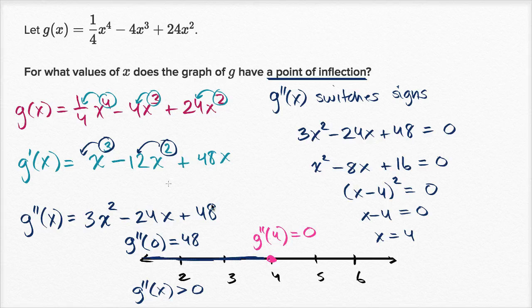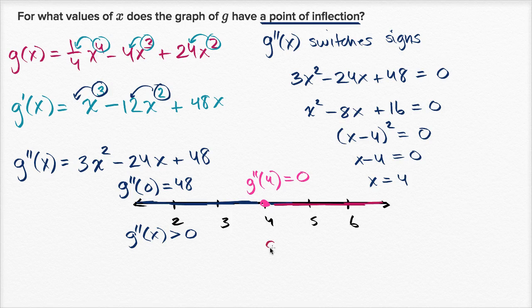Now let's think about to the right of four. So what about to the right of four? And so let me just evaluate, what would be an easy thing to evaluate? Well I could evaluate g prime prime of 10. So g prime prime of 10 is going to be equal to three times 10 squared, so it's 300, minus 24 times 10, so minus 240, plus 48.